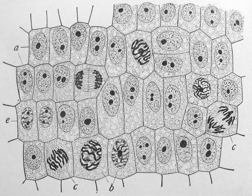Cells are of two types: eukaryotic, which contain a nucleus, and prokaryotic, which do not. Prokaryotes are single-celled organisms, while eukaryotes can be either single-celled or multicellular.